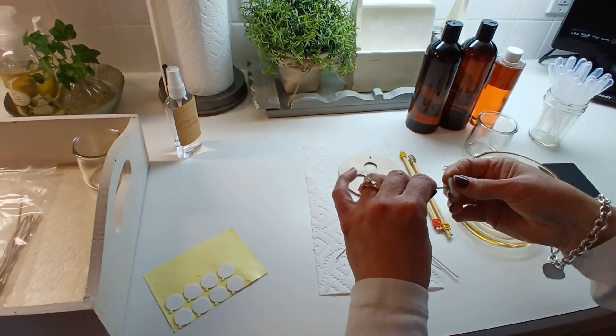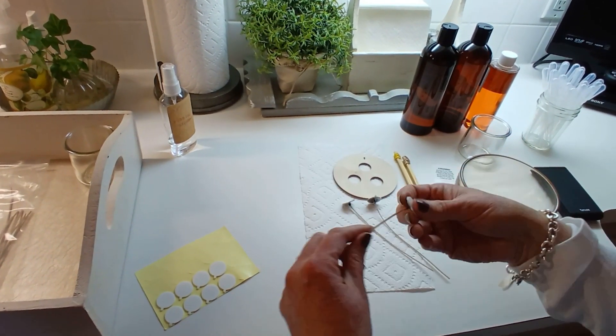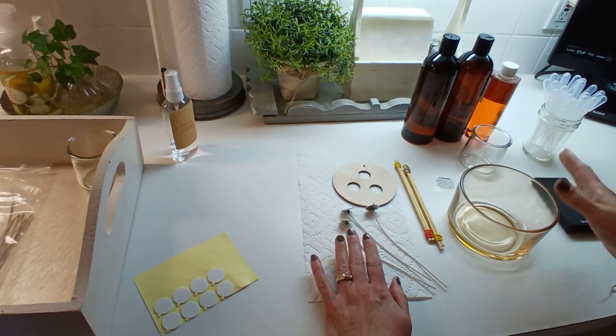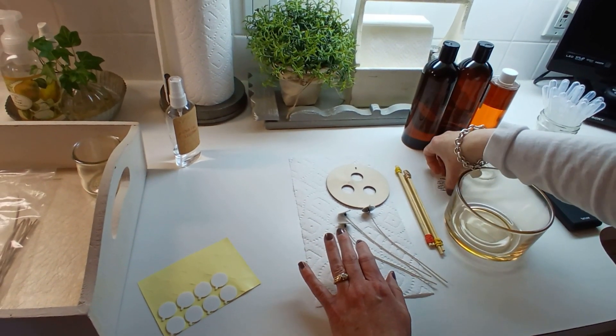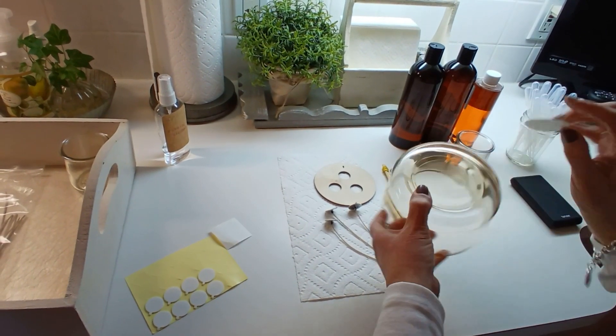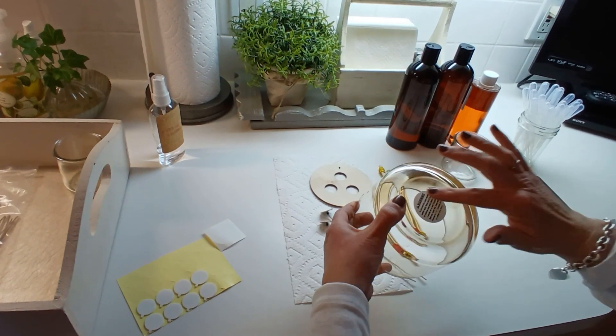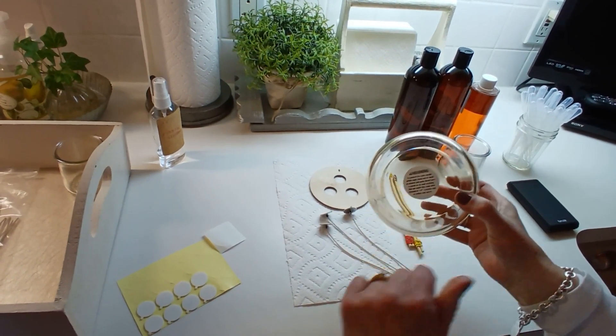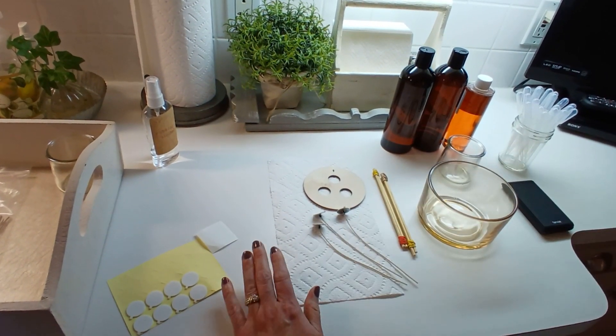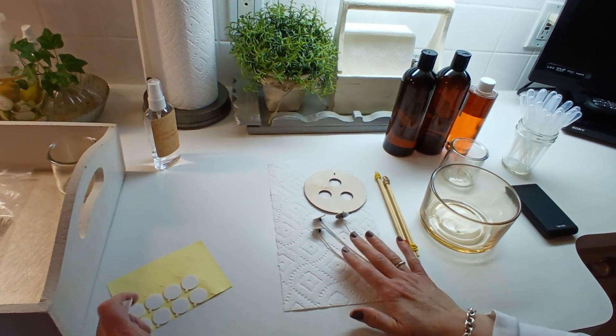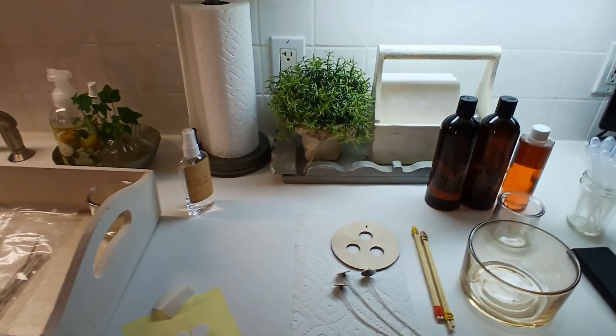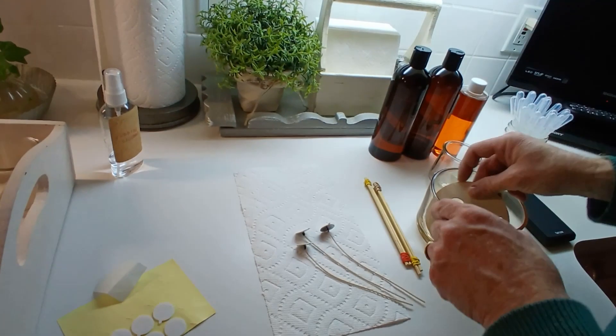You want these wick stickers to be on here very nice, and you want the bottom of your jar to be nice and clean. I also have a warning label. If I'm giving a candle, it's really nice to have a candle warning label on here. I'm going to let Ed wick this up for you.